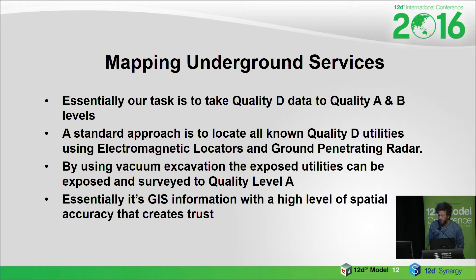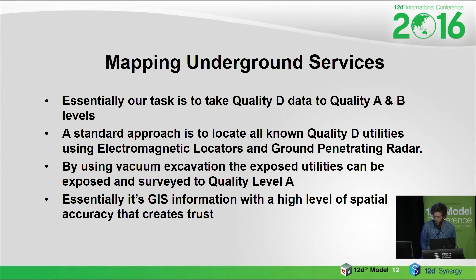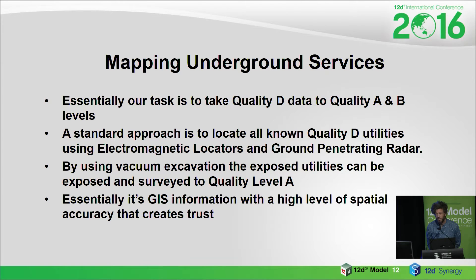So what are we actually doing? Basically we're just taking all that quality D information from the asset owners and moving it up to a quality A and B level. We're using EM locators, GPRs, and ultimately we're potholing — cutting up the road, getting down, visualising the utility, with our total stations out there pinning those points.